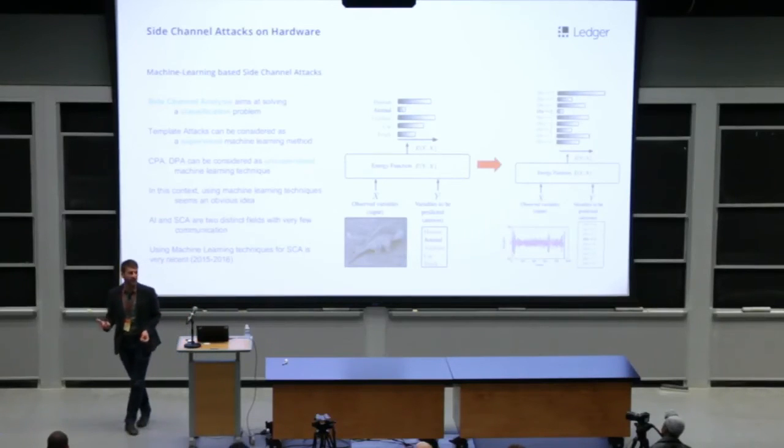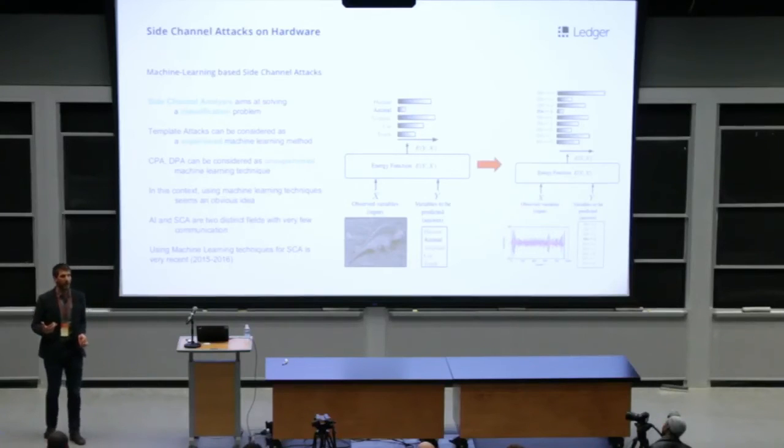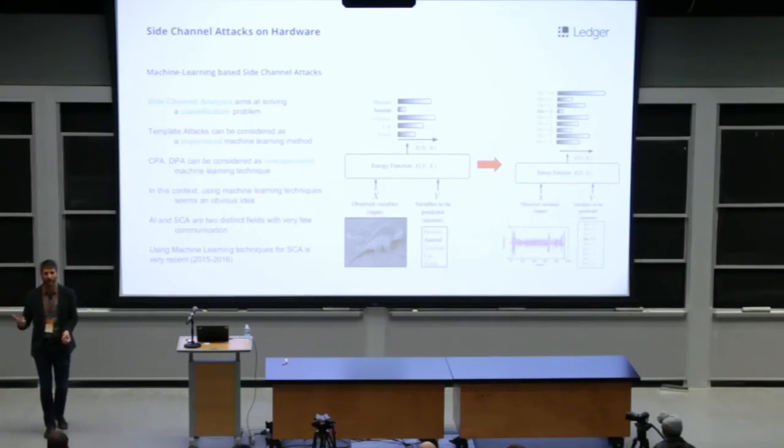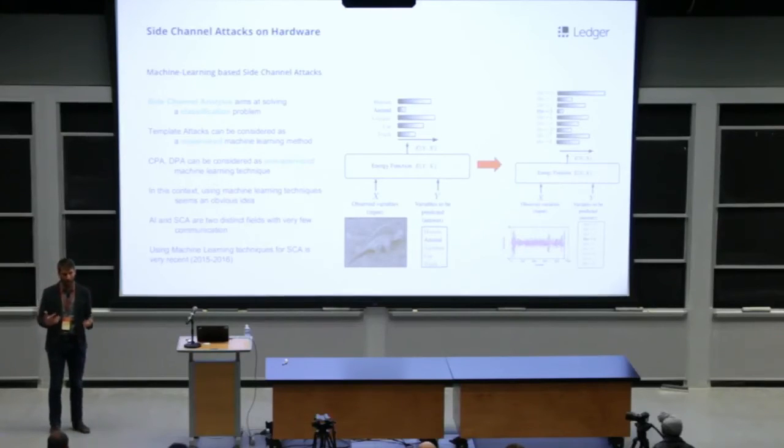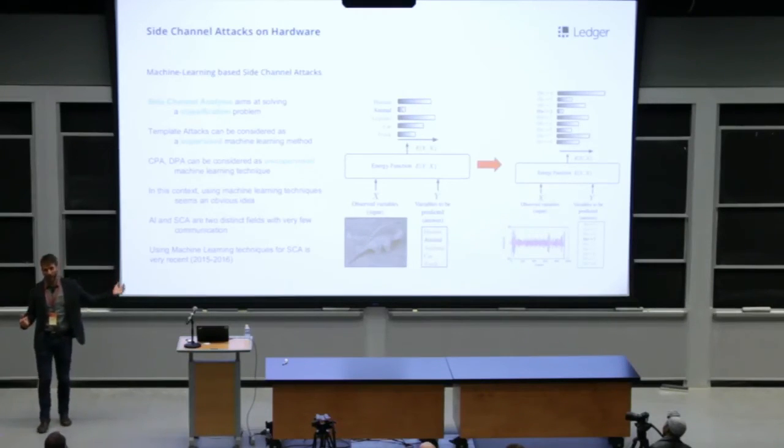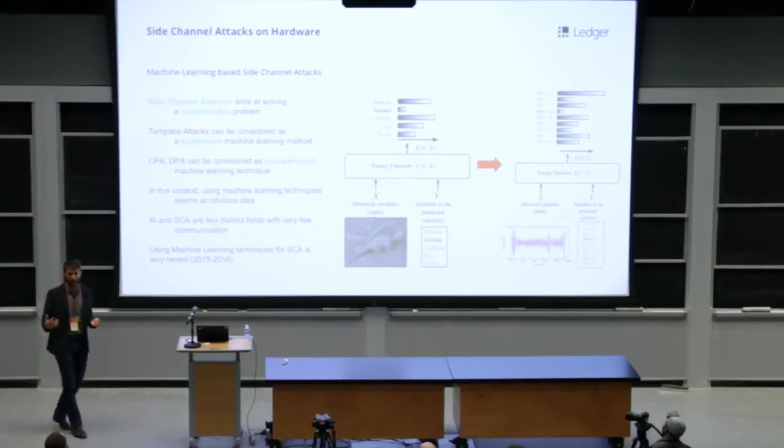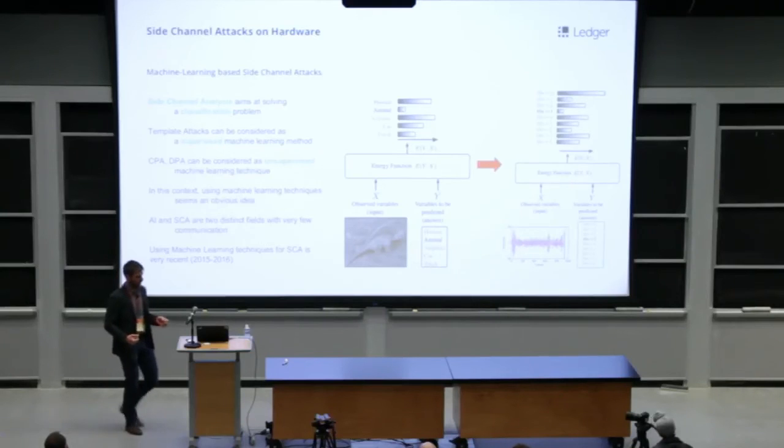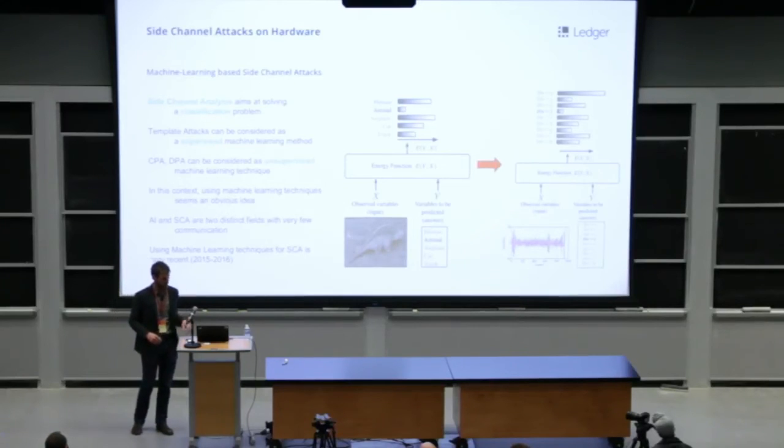To finish with side channel attacks, just a word on machine learning techniques. Side channel attacks aim at solving a classification problem and machine learning as well. So instead of classifying images as human, animal, airplane categories, the idea is to classify power traces in value of key bytes categories. And so we can take advantage of all the research done in the AI field in order to improve the efficiency to prevent the side channel attacks. The neural networks, the CNN convolutional neural networks are very good for side channel attacks.